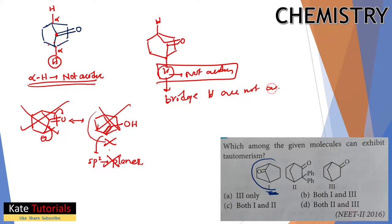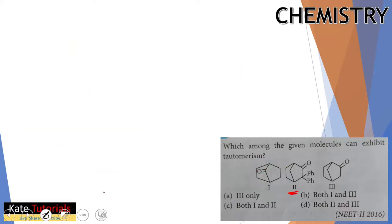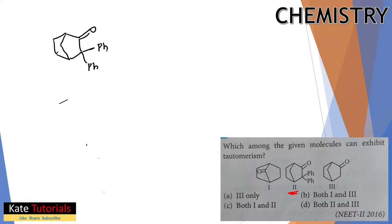So molecule 1 does not show tautomerism because its bridge hydrogens are not acidic. Now let us discuss the second molecule. It is also a cyclic bridged structure with a ketone group and two phenyl (benzene) groups attached. The alpha carbon has no acidic hydrogen - it cannot be acidic for the same reason. So molecule 2 also shows no tautomerism.